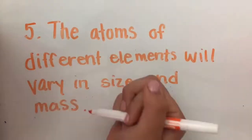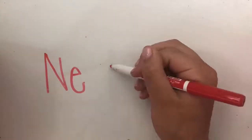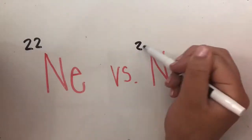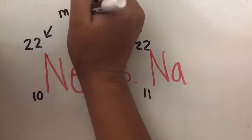Some different elements will vary in size and mass. Some elements do not have the same number of protons or neutrons, but coincidentally, they will have the same sum for their masses.